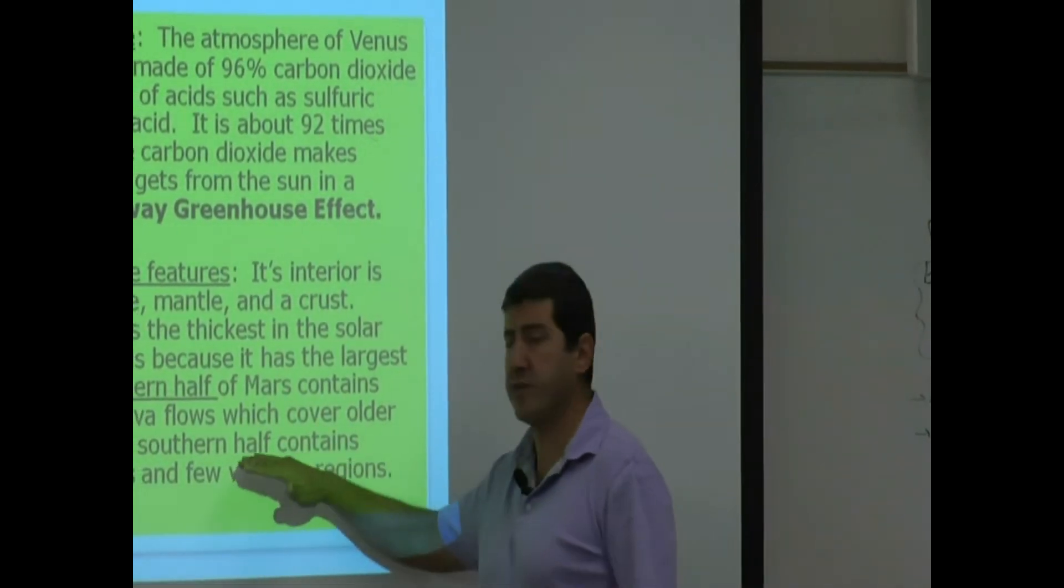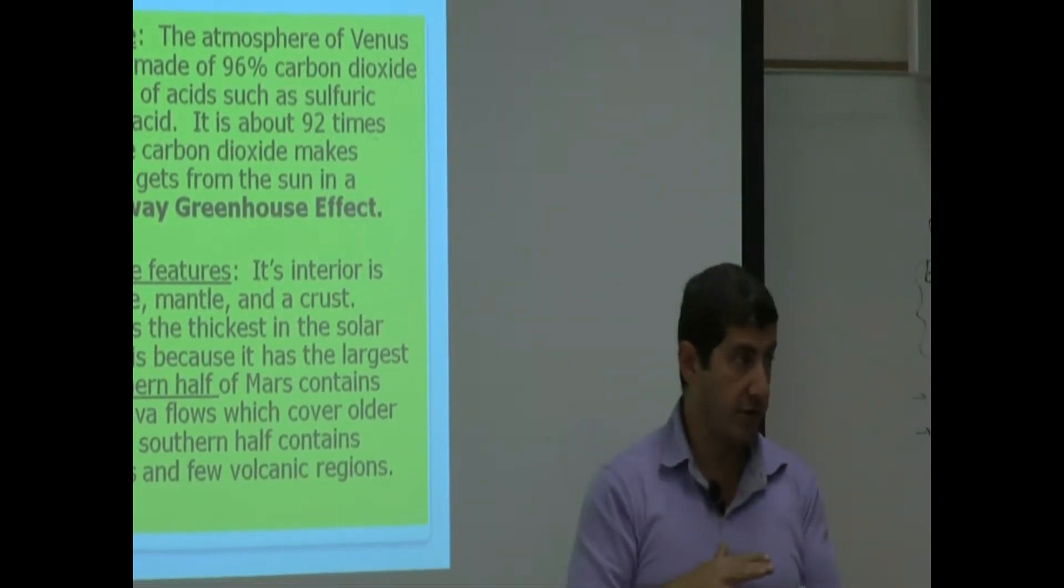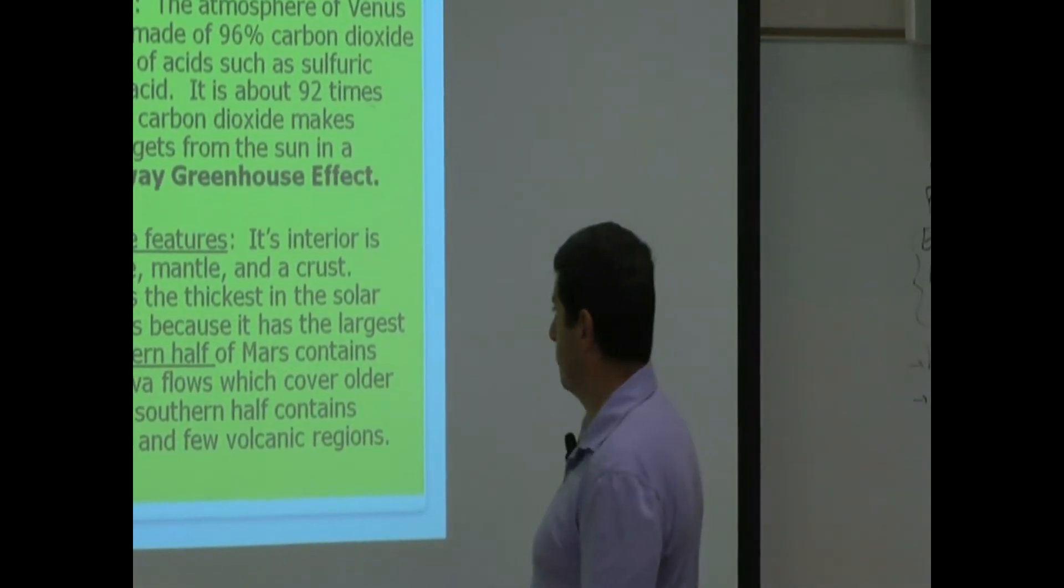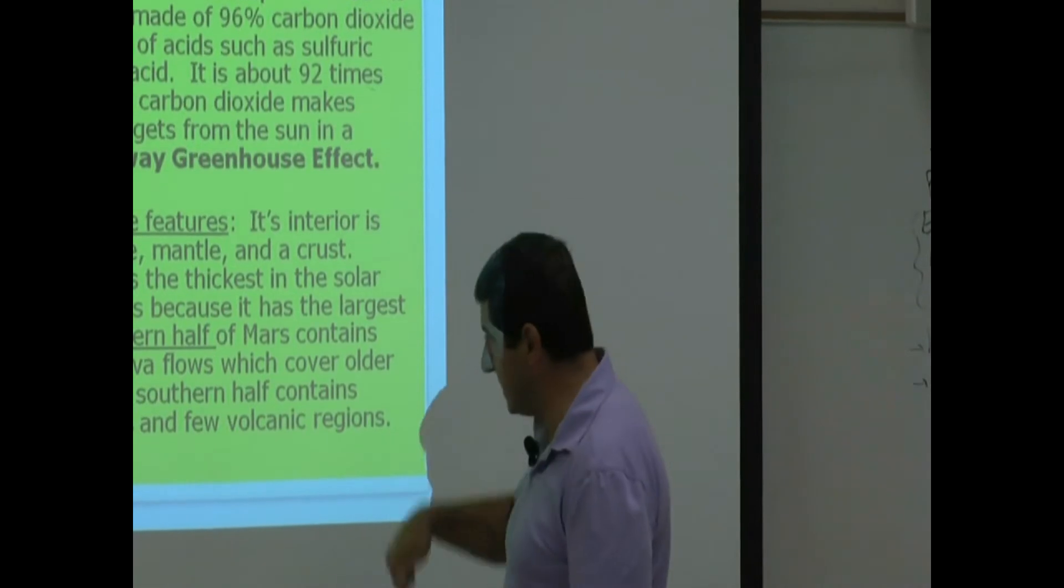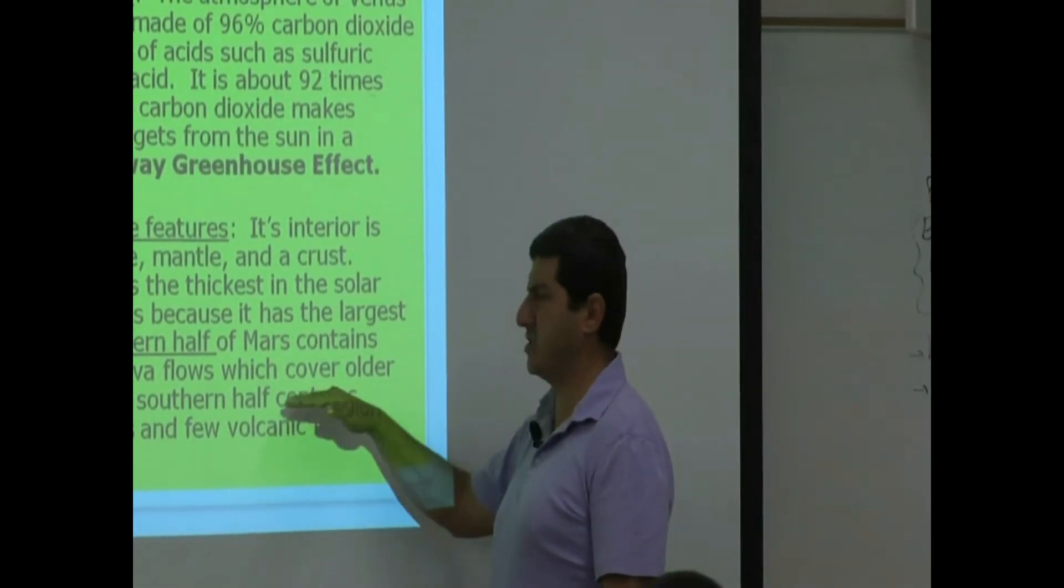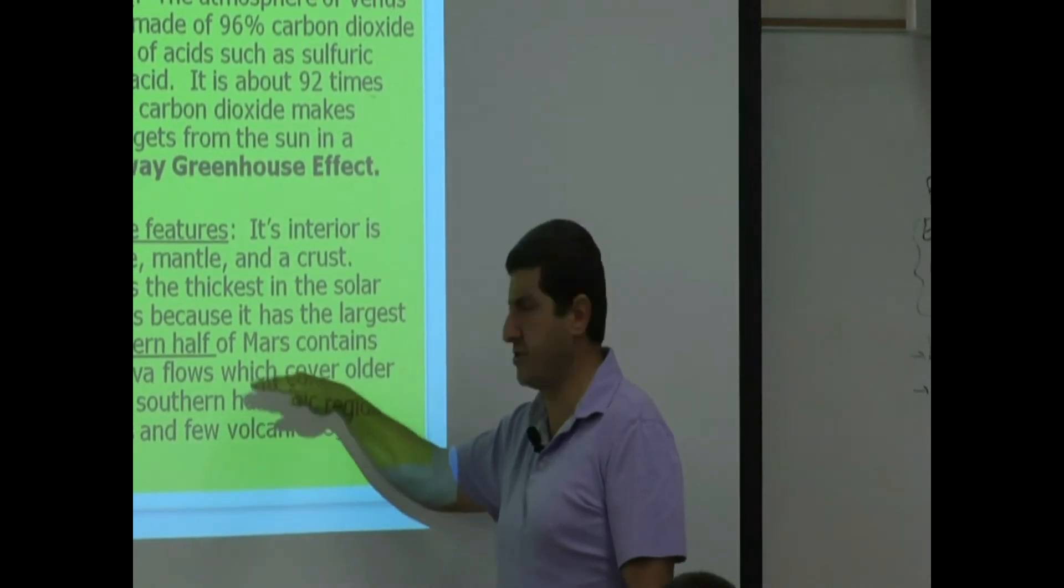The southern half looks a lot more cratered, a lot more battered. So the southern half contains many yet seen craters and few volcanic regions. So there seems to be a difference between northern and southern half.